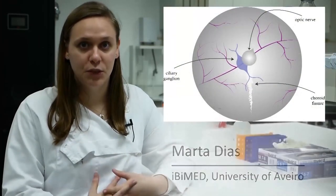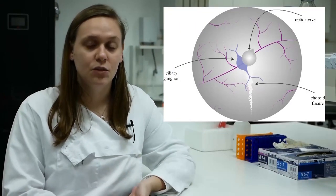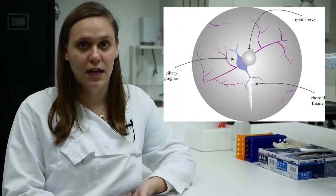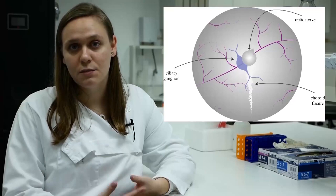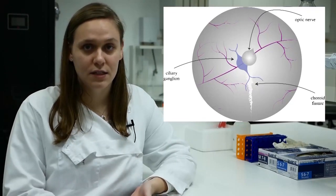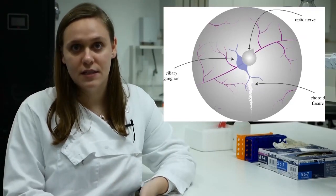The chicken ciliary ganglion is a structure localized in the posterior part of the eye, adjacent to the optic nerve and the choroid fissure. The ciliary ganglion neurons belong to the parasympathetic nervous system and are cholinergic neurons.